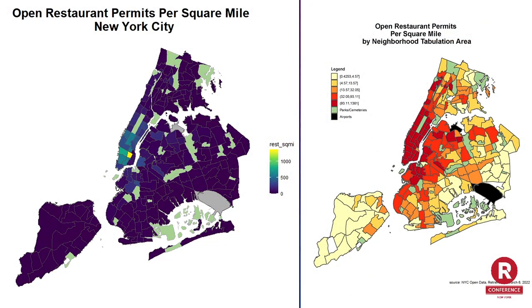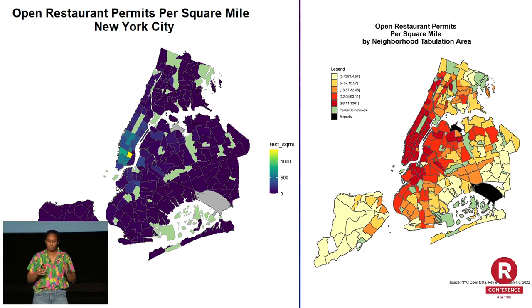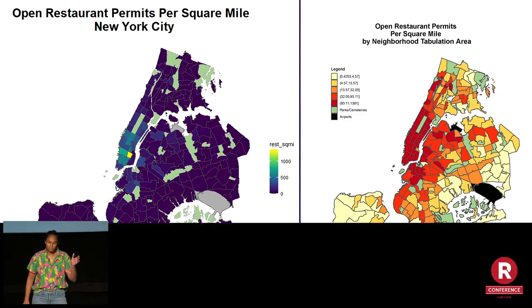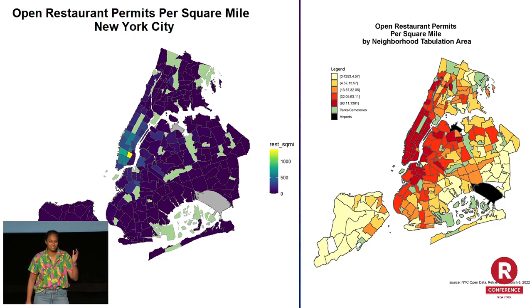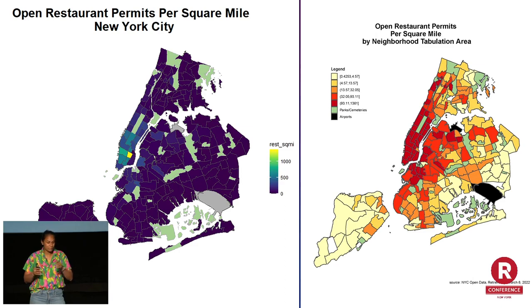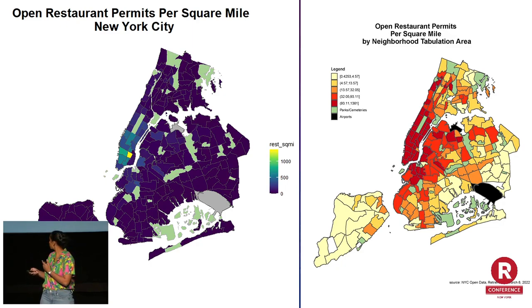I'm going to show you some maps made in R — not to flex, but I made these maps. I think this is a good example of how you can use the same data to get two different answers. On the left with the gradient, it looks like the East Village opened a million restaurants in March 2022. But on the right where I've bucketed it into quintiles, you can see it's really just that the East Village had an outlier — in the top bucket you have a lot of Manhattan, North Brooklyn, and Western Queens. I think the quintile approach on the right is a better way to visualize the data.